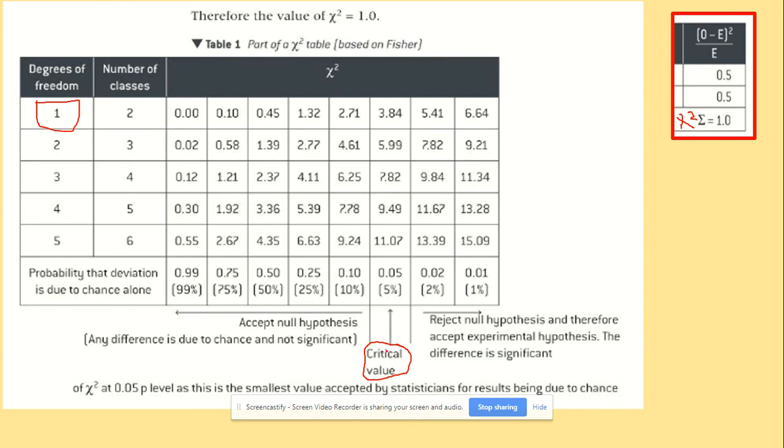So the critical value, so the p-value that we are looking at, we're going to compare our chi-squared with, is 3.84. So 3.84. Where is then our chi-squared? Our chi-squared lies somewhere here because it equals 1.